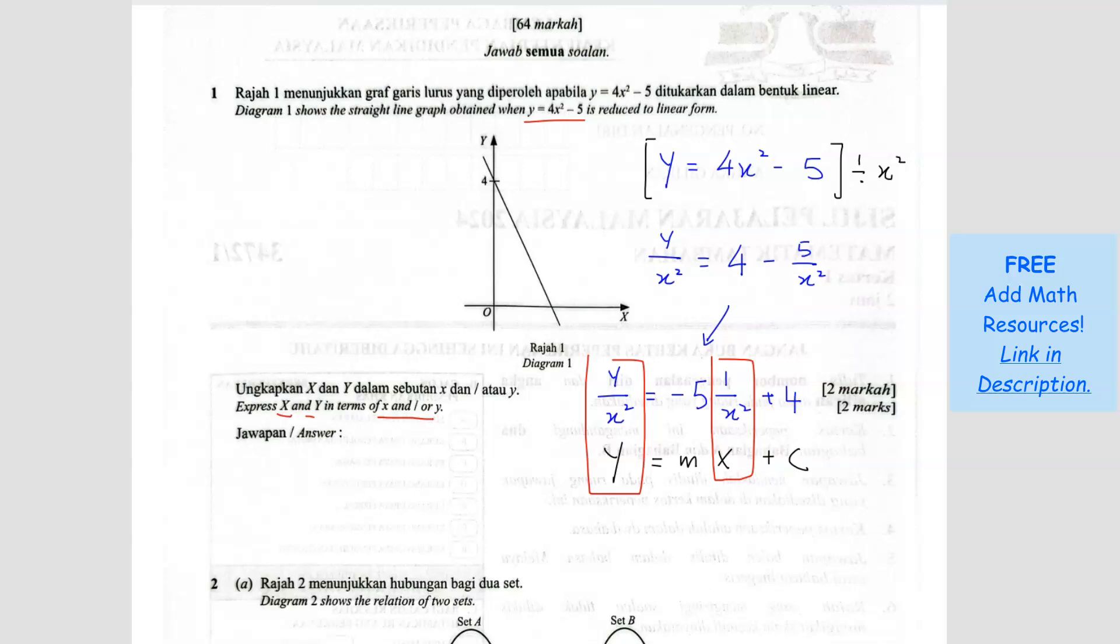So we can rewrite this. Y equals y over x², and X equals 1 over x². This is your answer.